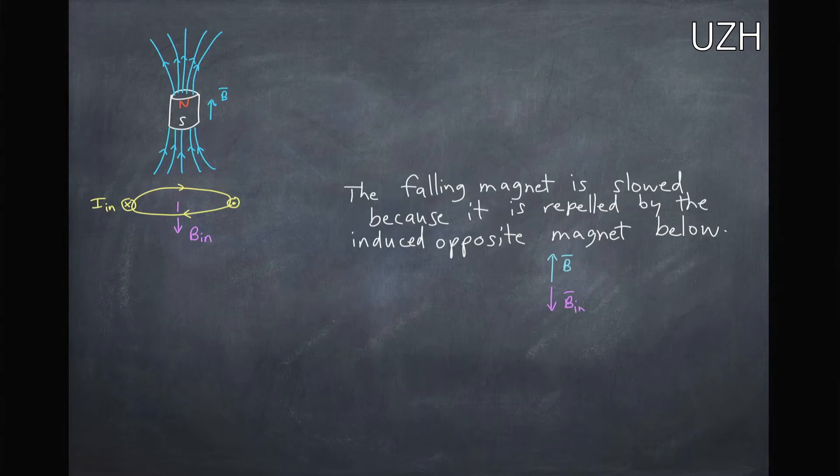Now what would happen is this falling magnet would be slowed because it's being repelled by a magnet that's pointing in the opposite direction below.